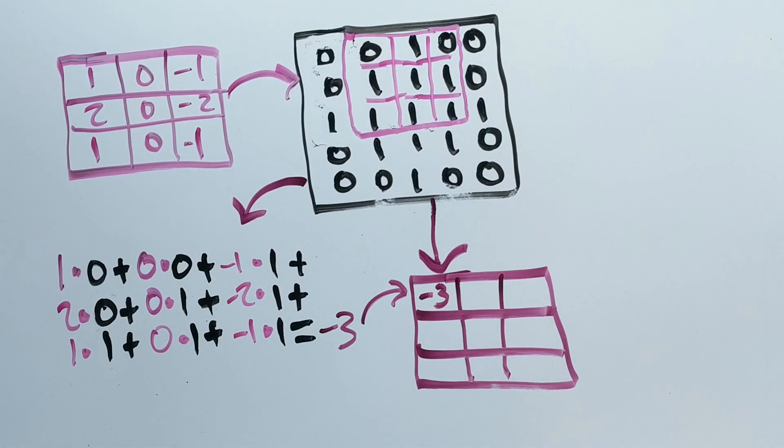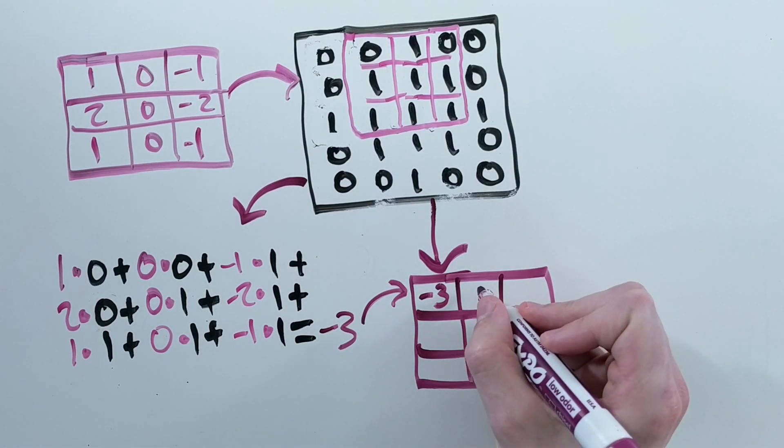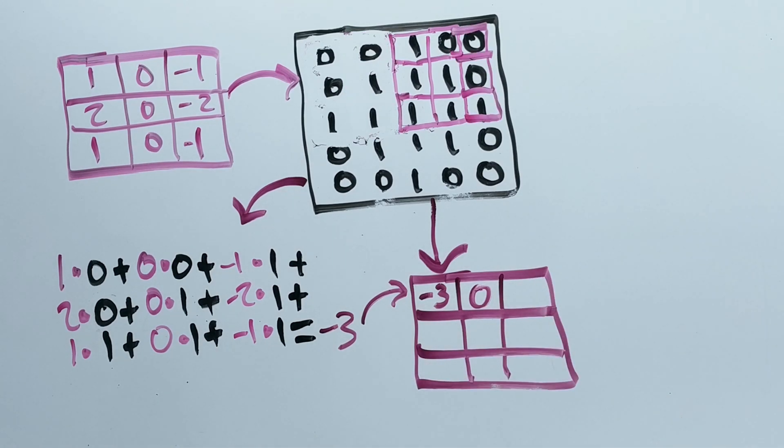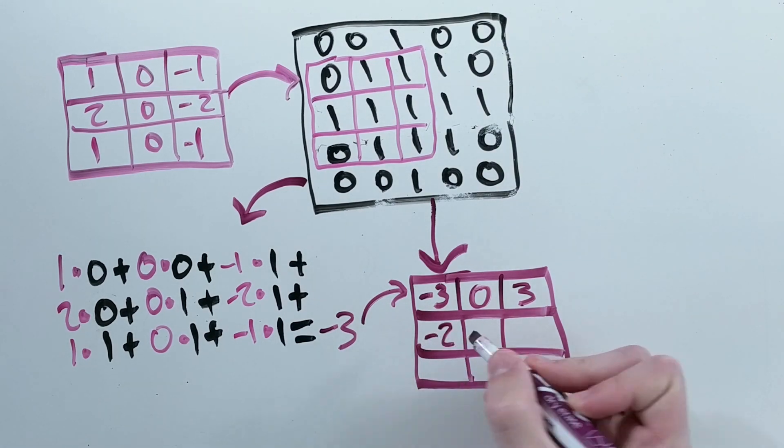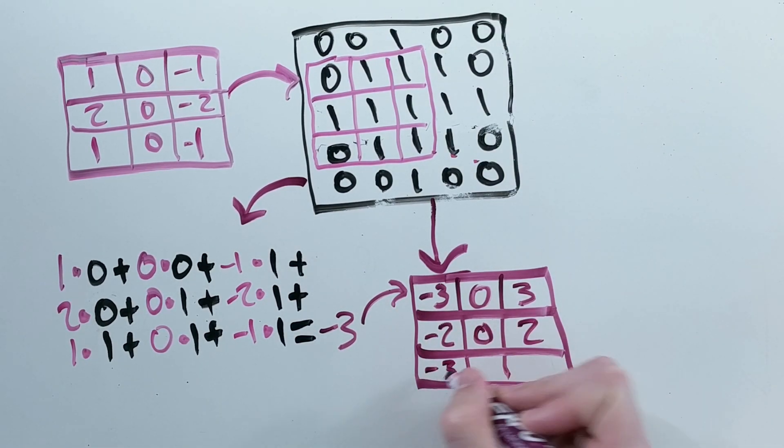Then we move to the next position, typically 1 over, and compute the dot product. Then we repeat until we reach the end of the row, in which case we move down a row, and we keep going all the way until we reach the bottom corner of our input.